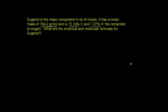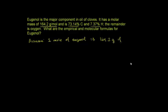The first piece of information given is that the molar mass of Eugenol is 164.2 grams per mole. To simplify things, let's just assume that we have one mole of Eugenol. A mole is just a huge number — like saying we have a million molecules, but even bigger. Since we have one mole, that will have a mass of 164.2 grams.